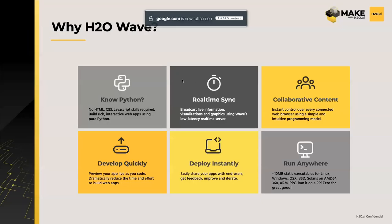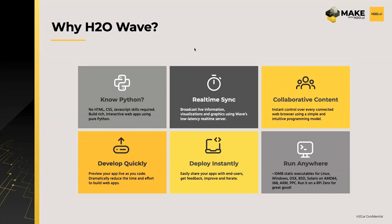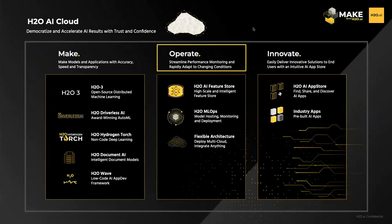As you can see, you can build really powerful applications very quickly with H2O Wave — all in Python. The data streams in real time, updates in real time, and runs very quickly. You can deploy them right out of the App Store, and they can run anywhere — very flexible in terms of architecture. That was everything around Make: we covered H2O3, Driverless AI, Hydrogen Torch, Document AI, and H2O Wave. Moving over to Operate, we're going to cover Feature Store and MLOps next.